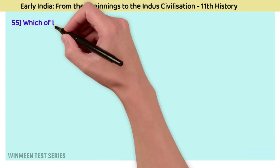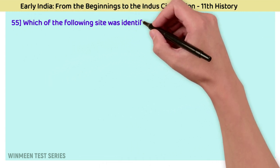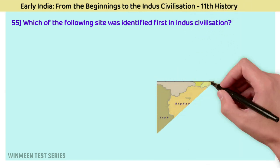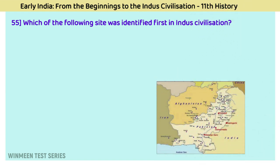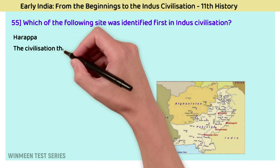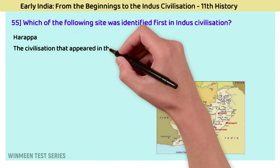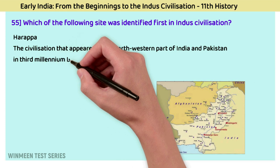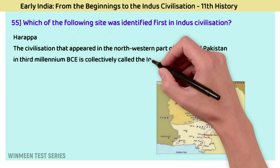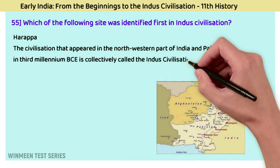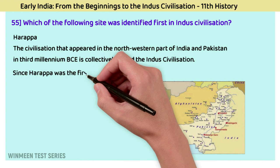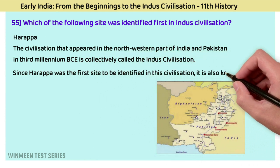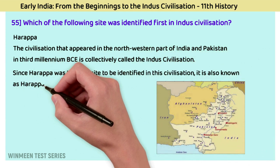Question 55: Which site was identified first in the Indus civilization? The answer is Harappa. The civilization that appeared in the north-western part of India and Pakistan in the third millennium BC is collectively called the Indus civilization. Since Harappa was the first site to be identified in this civilization, it is also known as the Harappan civilization.